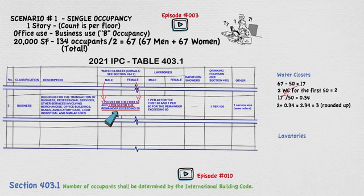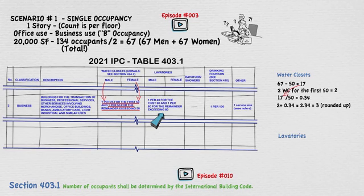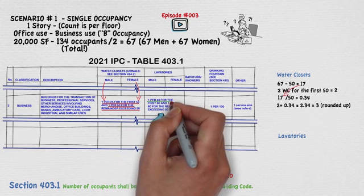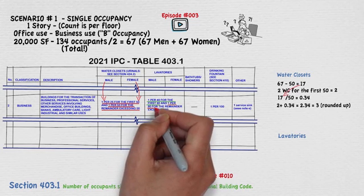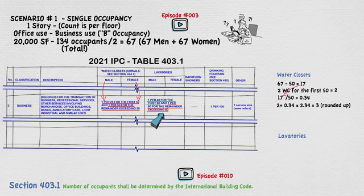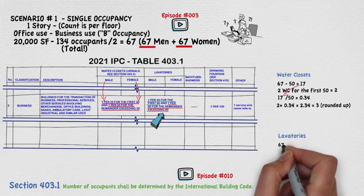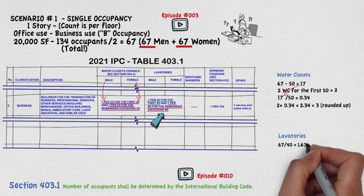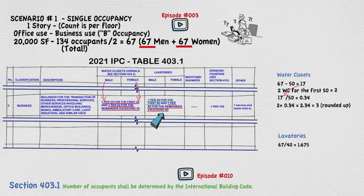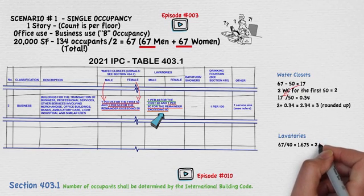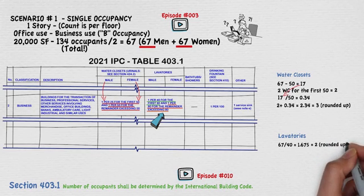We now repeat this mathematical process for the lavatories using the information on the chart. Like the water closets, the requirement for male and female are the same: 1 lavatory per 40 occupants for the first 80, and 1 per 80 for the remainder exceeding 80. However, our occupant load is only 67, so it does not exceed 80. Since we have 67 occupants divided by 40, we need 1.675 lavatories — rounded up, 2 lavatories are required.